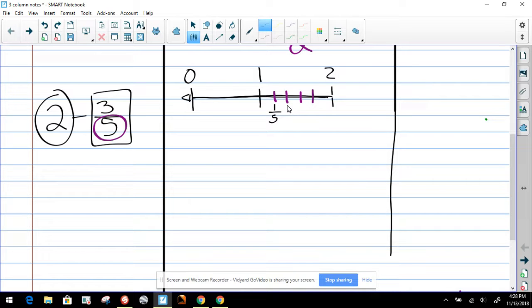It's going to be 1/5, 2/5, 3/5, 4/5, and 5/5. Okay. Now remember, this section from here to here equals 1. So that's why this one shows 5/5.